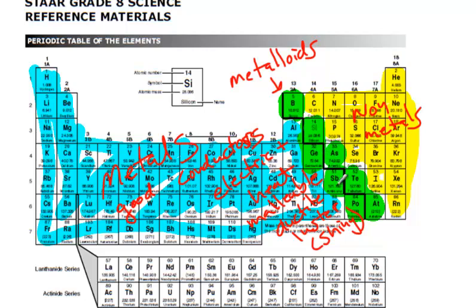Metalloids, which are touching the bold line on your periodic table, with the exception of aluminum, have characteristics of both non-metals and metals. Silicon is a perfect example of that, which is often used in semiconductors.